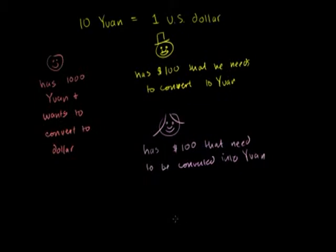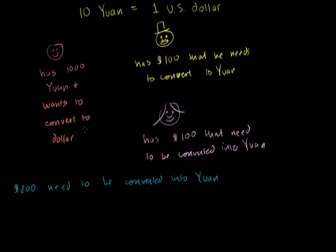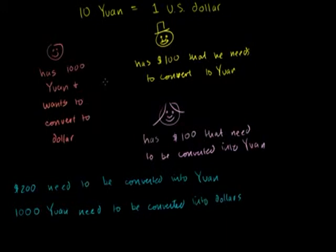So net-net, what's happening here? What's the total demand to convert yuan into dollars and dollars into yuan? Well, if you look at the whole market, you have $200 that need to be converted into yuan, and on the other side, 1,000 yuan need to be converted into dollars. For simplicity, these are the only actors representing the entire market — although, as we know, currency markets have thousands or even millions of actors actively participating.